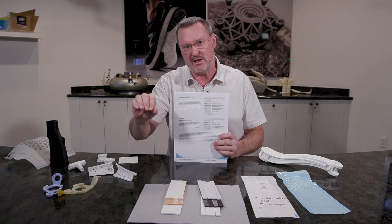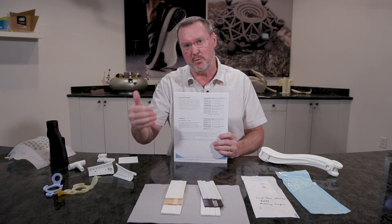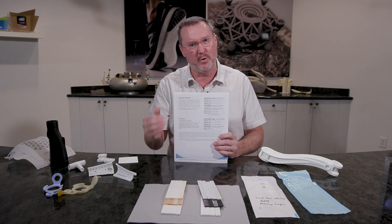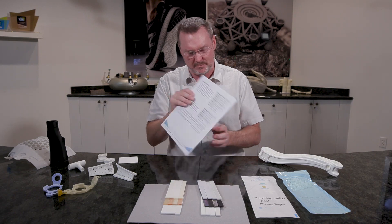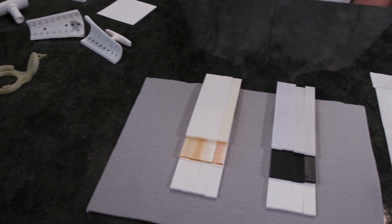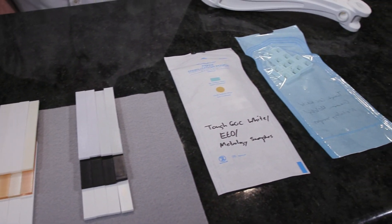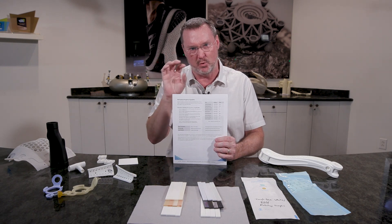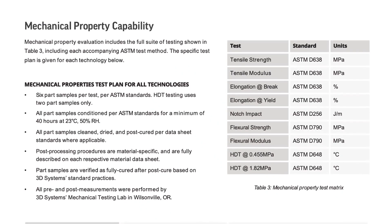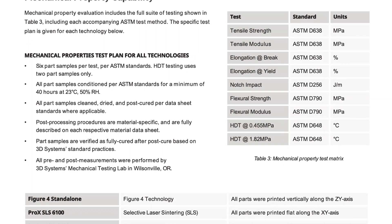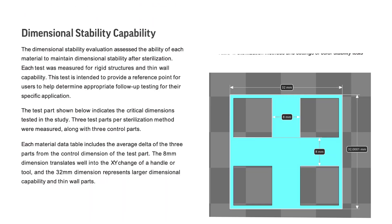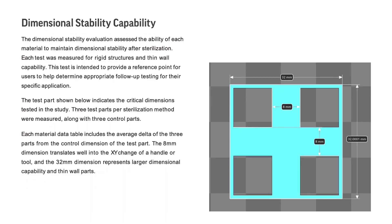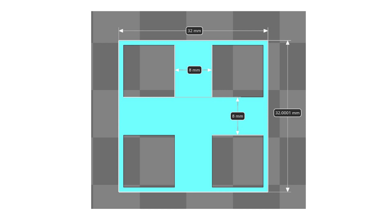When you invest your time and resources into seeing whether a material works for your application, you've got a really good starting point and understanding of how these are going to respond. In the testing, we looked at before and after sterilization. We looked at mechanical properties — a vast sweep of them — and we also looked at dimensional stability: how does the material respond when going through autoclave or gamma? Does it distort, or does it hold its capability?